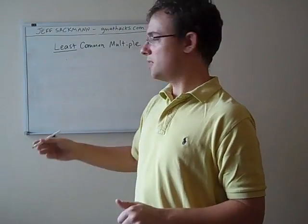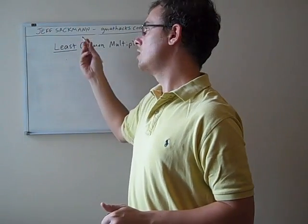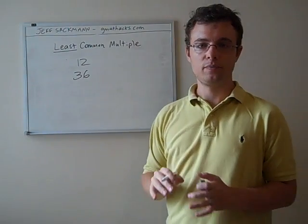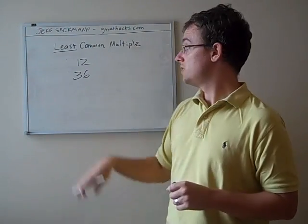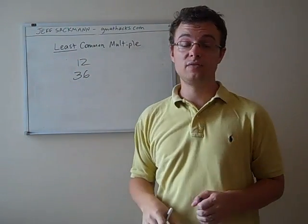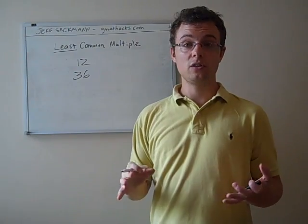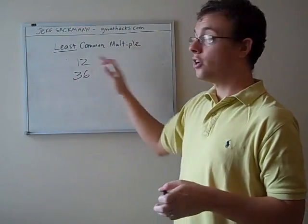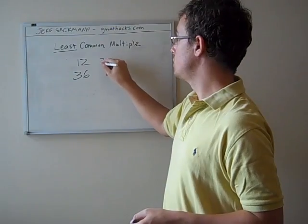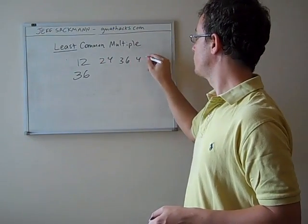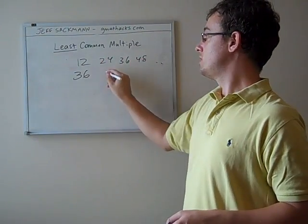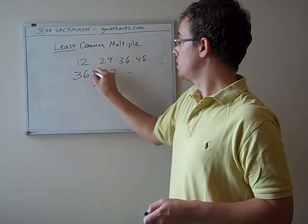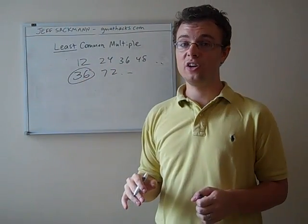The first one, let's say you've got something like the least common multiple of 12 and 36. Now, what you might notice is that 36 is divisible by 12. Done deal. Now, what some people do, mistakenly, is they'll start making those lists. They'll go 12, 24, 36, 48, and so on, 36, 72, and so on, and they'll ignore the 36 right here.